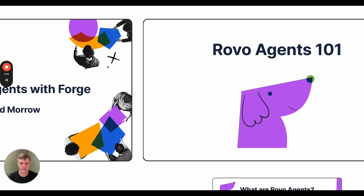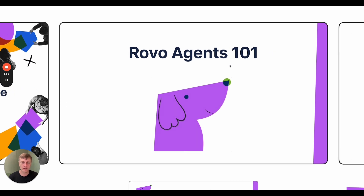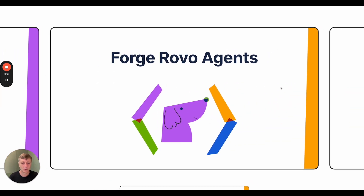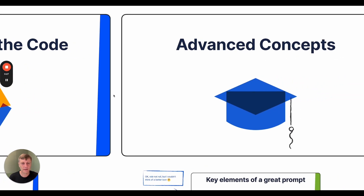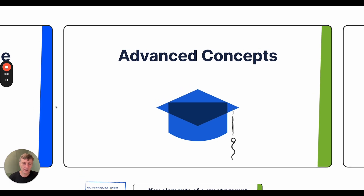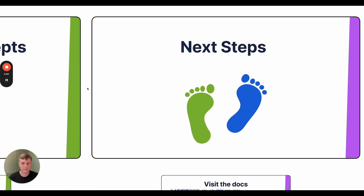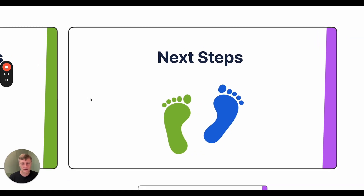So let's take a look at the agenda. We'll start by taking a look at some of the basic concepts of Rovo agents, just using the out-of-the-box capabilities during this stage. We'll then go and create a Rovo agent, and dig into the details of some of the code to explain how that agent works. We'll then take a look at some of the more advanced concepts of Rovo agents and the code, because some concepts may not be completely obvious if you're exploring this on your own. And finally, I'll provide some resources to help you go on and create Rovo agents on your own.